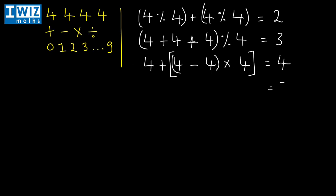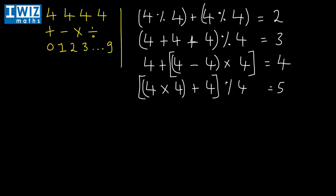Now let's try and get to five. We can get to five by recognizing that five is just twenty divided by four. So four times four gives sixteen, add four to it to get twenty, and then divide by four to get five.